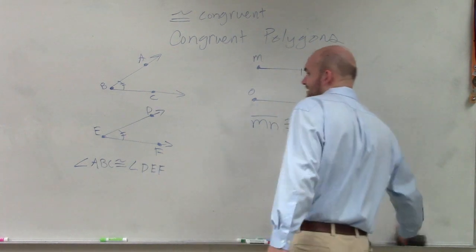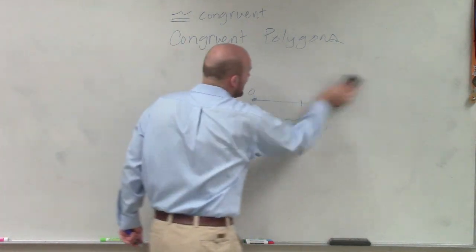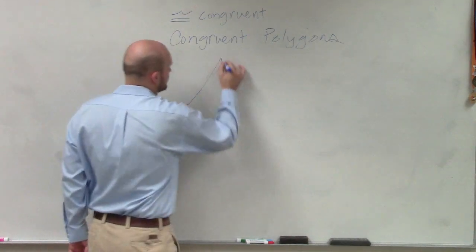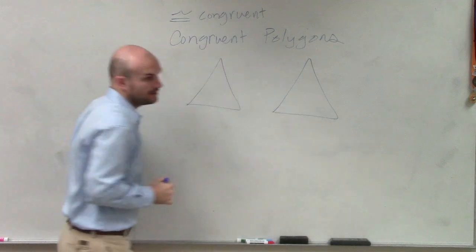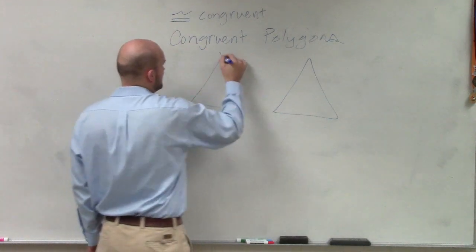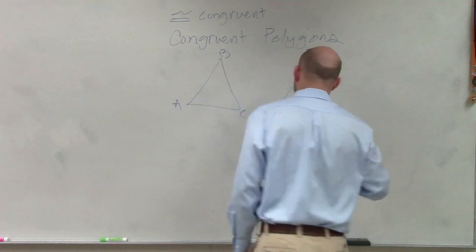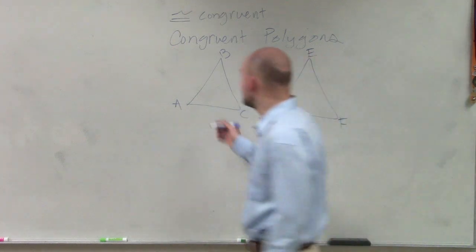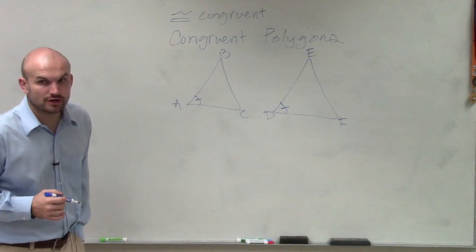So how is that going to help us with congruent polygons? So congruent polygons, ladies and gentlemen, are polygons that have congruent parts. So let's call this A, B, C, D, E, F. If polygons are congruent, that means all of their parts are congruent.